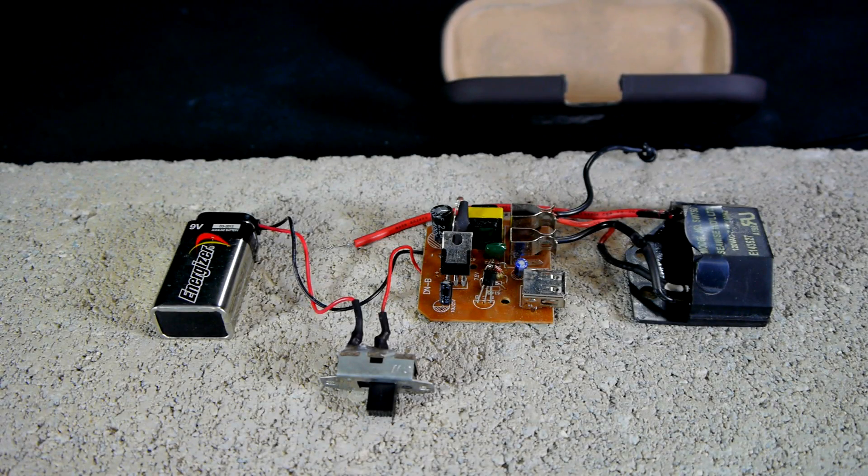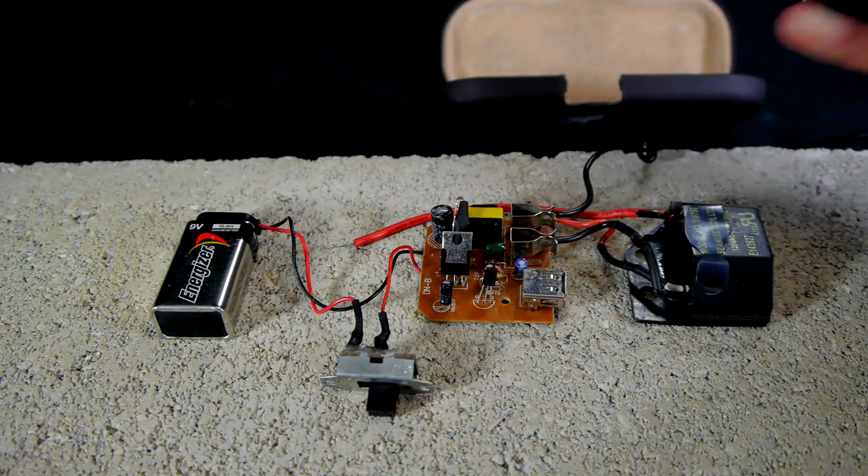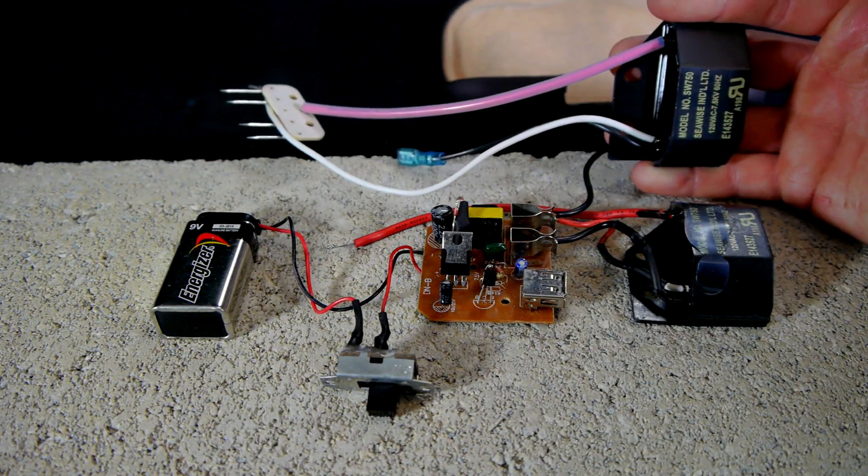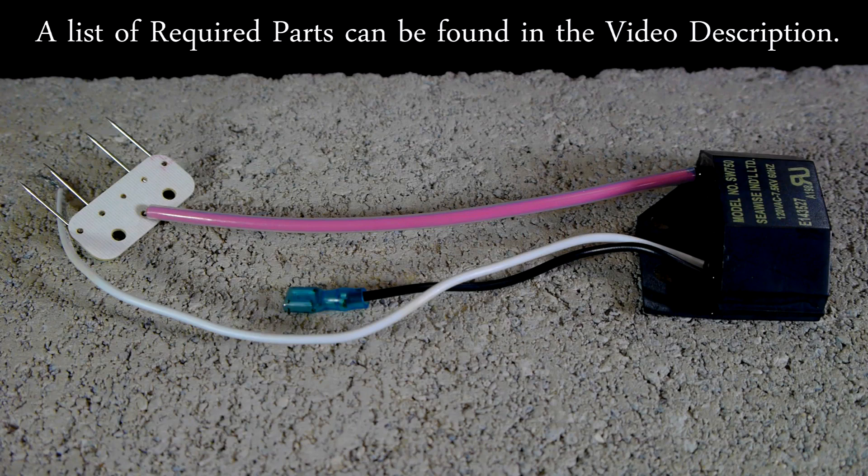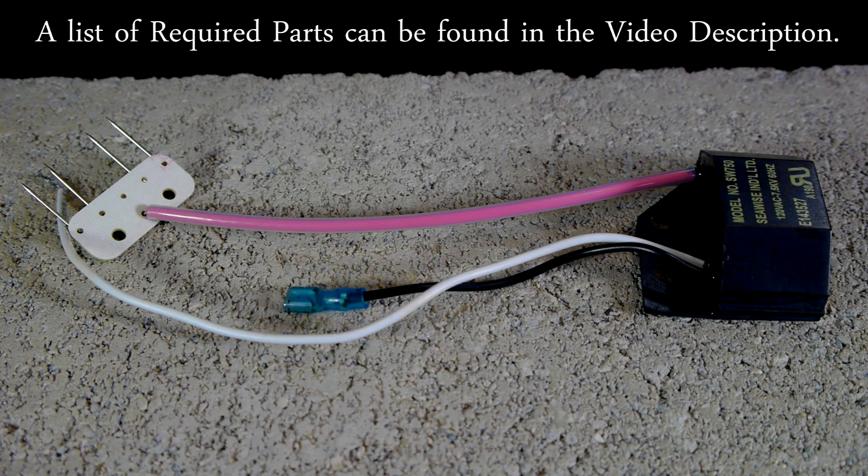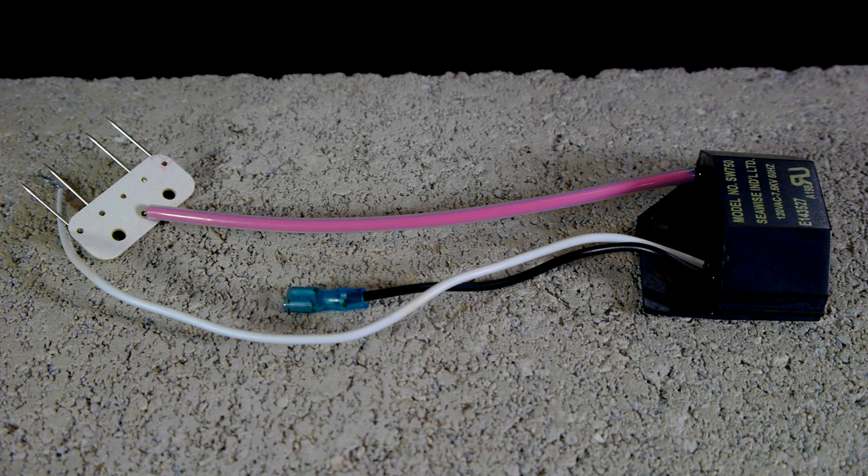The electronics used in this project are in a very simple configuration all built around powering a negative ion generator. This is the component of our project that is capable of producing the high voltage electrical charge that we end up with. It does so by pushing electrons out through the wire that currently has the prongs attached.